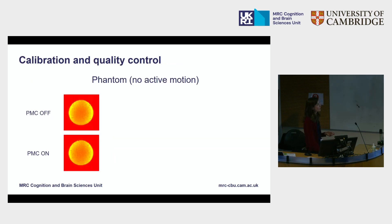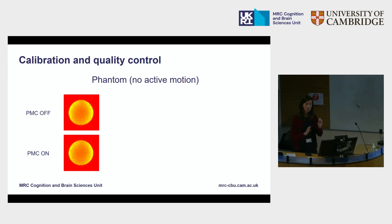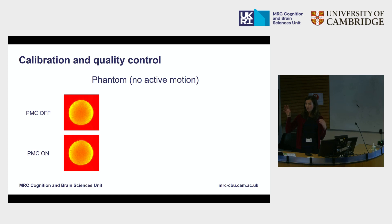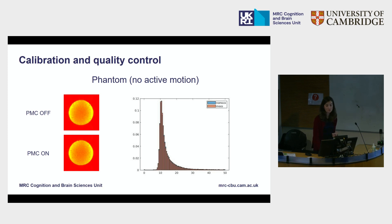So we're rebuilding everything from scratch, starting with calibration and quality control. After reinstalling and recalibrating the system, these are the images we're getting for a phantom — without motion correction and with motion correction. There should be no difference between these images, since the phantom is not moving. If the system were poorly calibrated, it would pick up random noise and introduce it into the sequence, and we would see a difference. But we do not — there's a histogram of TSNR values for the phantom with PMC on and PMC off, and we see no difference at all. This is very encouraging.